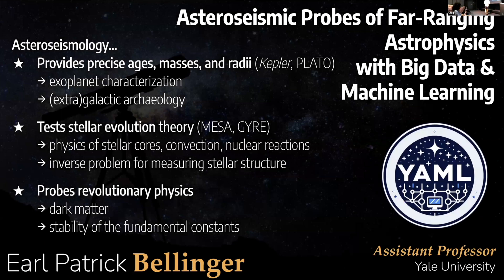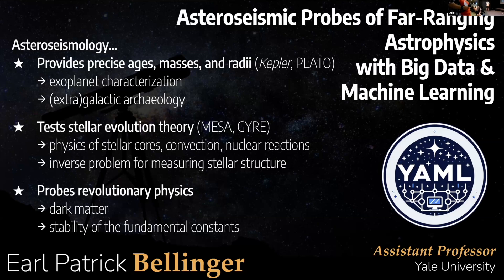So that's what I wanted to tell you today. Asteroseismology allows us to look inside the stars, giving us measurements of their ages, masses, and radii. This has a huge number of applications throughout astronomy — characterizing exoplanets and understanding how our galaxy formed and evolved. We get to test and improve stellar evolution theory: we've learned the physics of stellar cores, how convection operates, and we can potentially improve measurements of nuclear reaction rates. We have an interesting inverse problem being tackled with machine learning — trying to distinguish between our best models of stellar structure and the actual structure of the star. And finally, it can shed light on potentially revolutionary physics, probing prescriptions for dark matter and testing the stability of the fundamental constants of nature. Thank you.